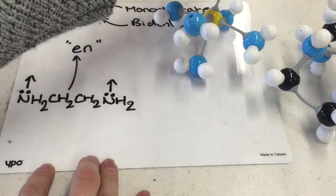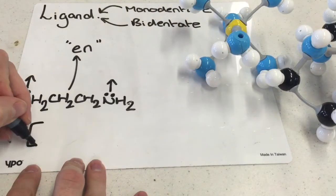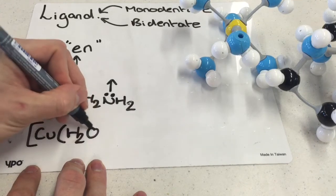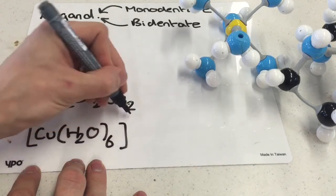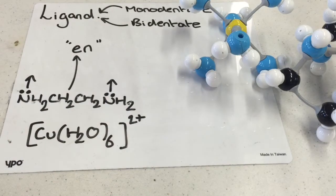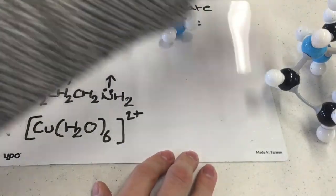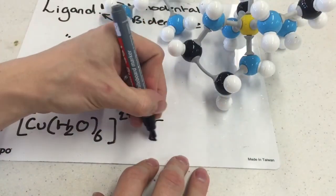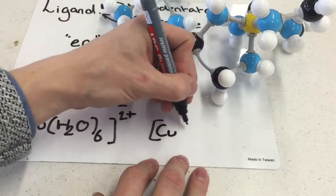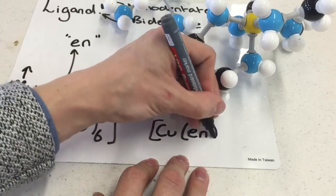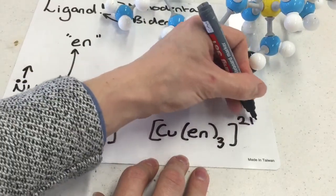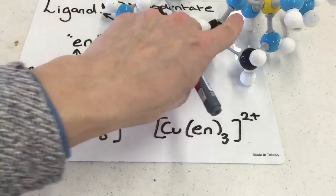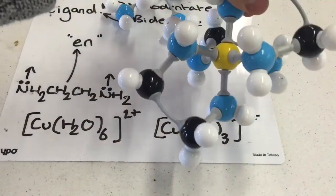Again, for instance then, if I was to write the water containing one, so let's say my metal is copper, let's say it's copper two plus specifically. If I write the water containing one, my complex ion formula looks like this, whereas if I write the 1,2-diaminoethane formula, even though they have the same coordination number, they have a different number inside their formula, since this one is now surrounded by bidentate ligands.